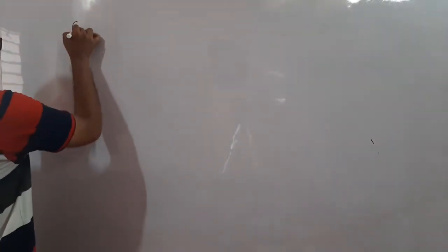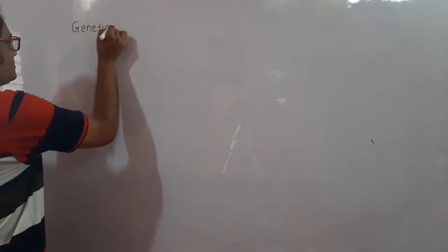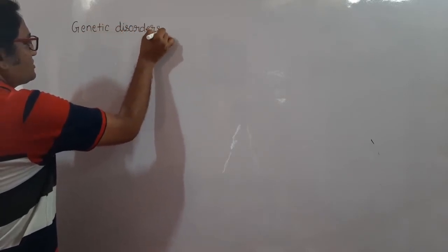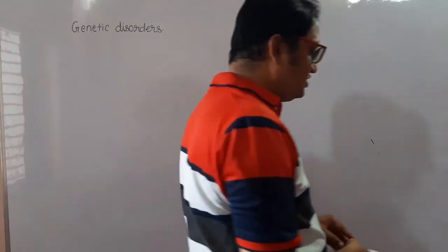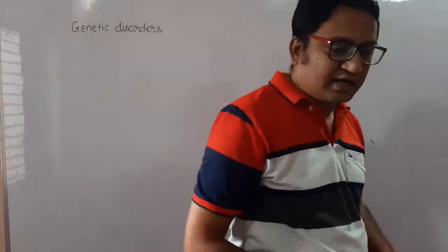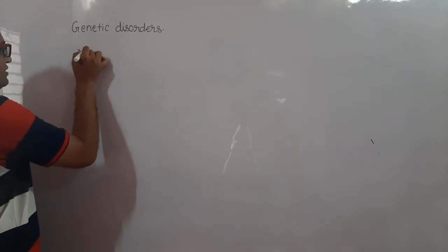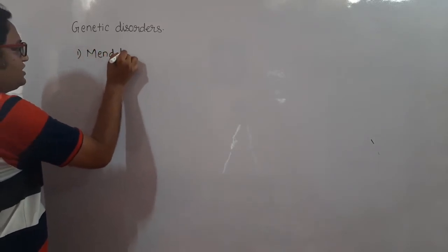So what are genetic disorders? Genetic disorders are broadly classified into two types: number one, Mendelian disorders.